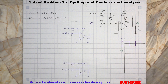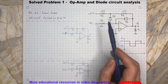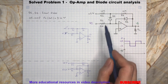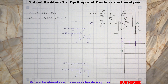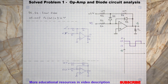Let's assume Vi is greater than zero. Then it forward biases the diode D1. At the same time, it forces the op-amp output to swing to its negative saturation point, which reverse biases the diode D2 and turns it off.